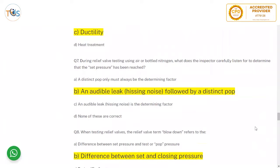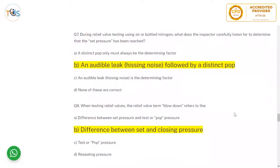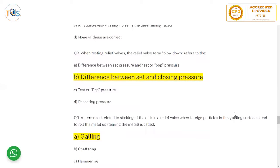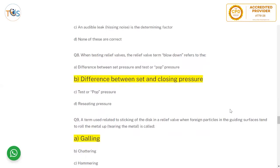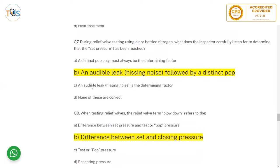Sample question: During relief valve testing using air or bottled nitrogen, what does the inspector carefully listen for to determine that the set pressure has been reached? The answer is an audible hissing or leak sound, followed by a sudden pop — similar to a pressure cooker. This is the most appropriate and complete answer, as eventually the hissing leads to the valve suddenly popping open.